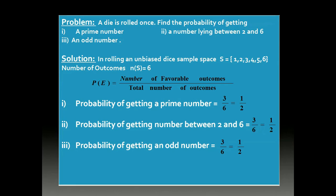The second part is a number lying between 2 and 6. The numbers between 2 and 6 are 3, 4, and 5 — again three numbers. So the number of favorable outcomes is 3 by 6, which equals 1 by 2. For the third part, probability of getting an odd number: the odd numbers in the sample space are 1, 3, and 5, so the number of favorable outcomes is 3 by the total number of outcomes, which is 6. So 3 by 6 equals 1 by 2.